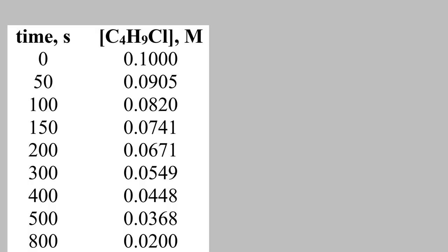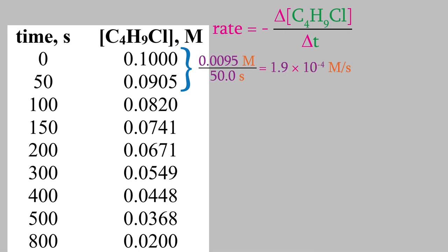Here's the concentration of chlorobutane at different times during the reaction. If we use the first two points, you can see that the concentration changes by 0.0095 molar, and the time changes by 50 seconds. But suppose we use the second and third points instead. The change in concentration now is 0.0085 molar, and the change in time is 50 seconds. That gives us a rate of 1.7 times 10 to the minus 4 molars per second. That's different than what we got with the first two points.